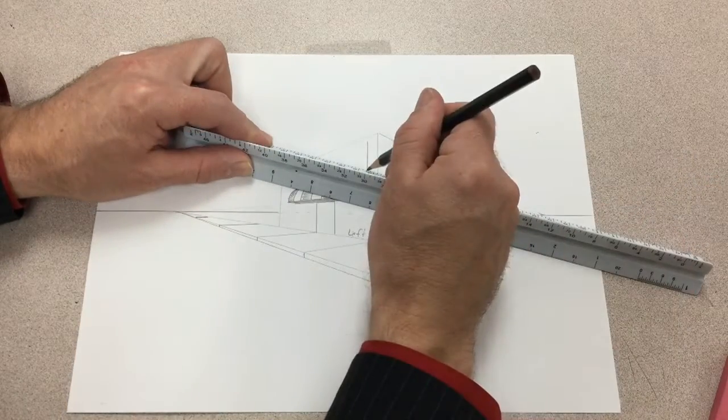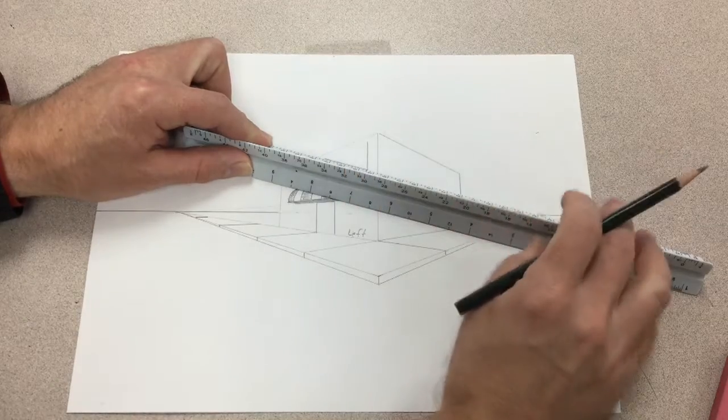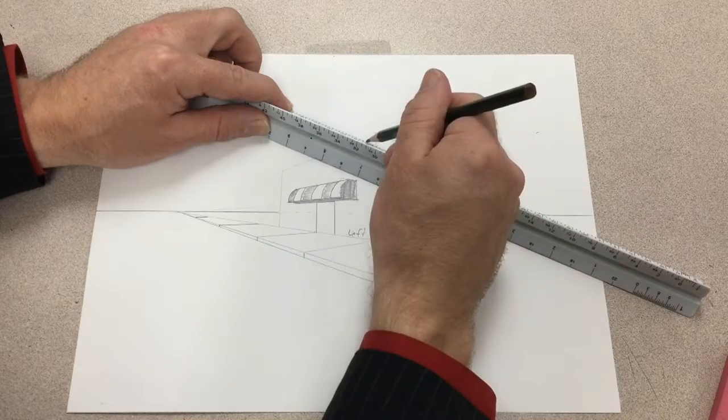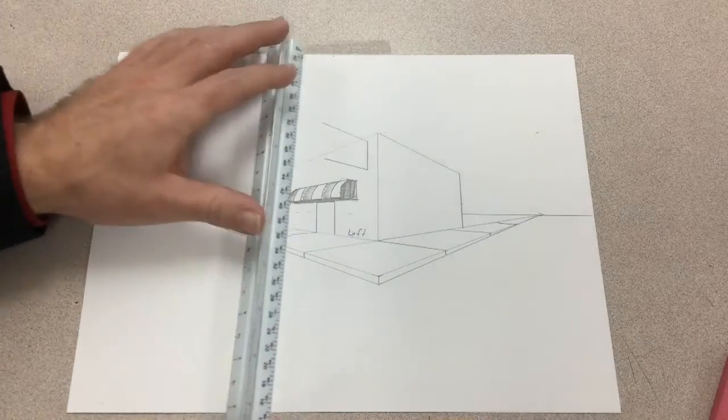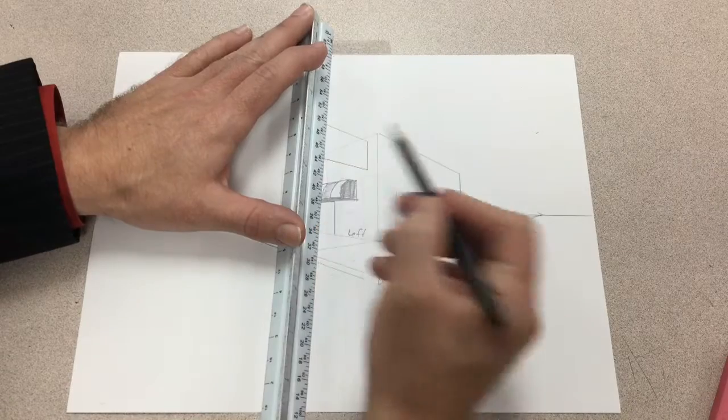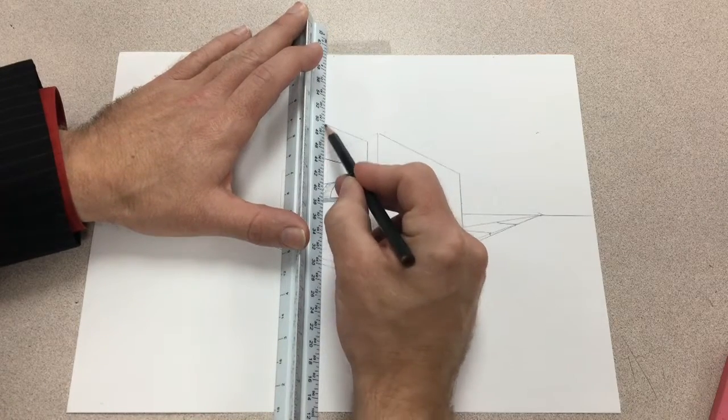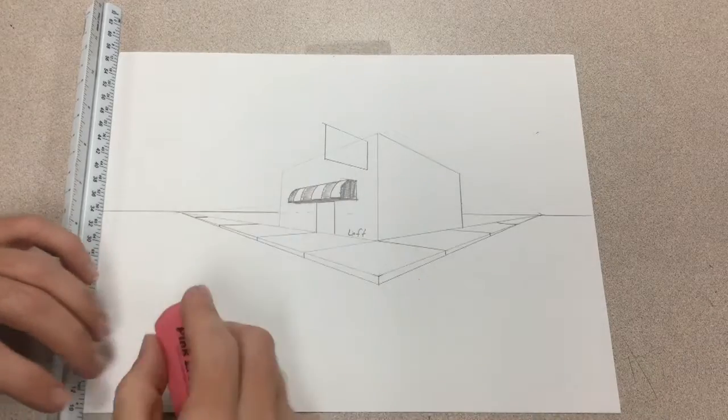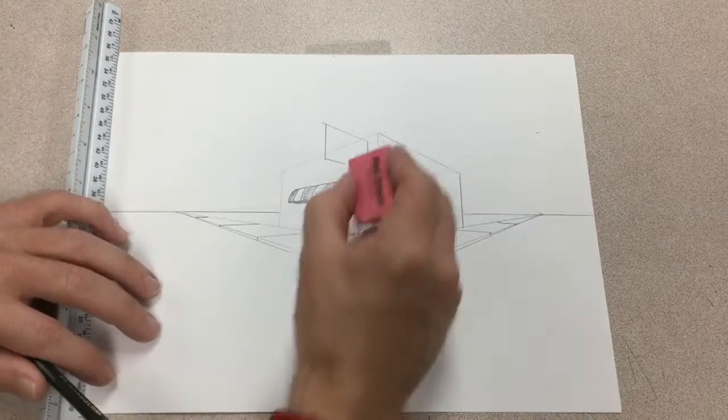Then we're going to finish that off with a vertical line. Okay, so right now I just have one side of my sign.